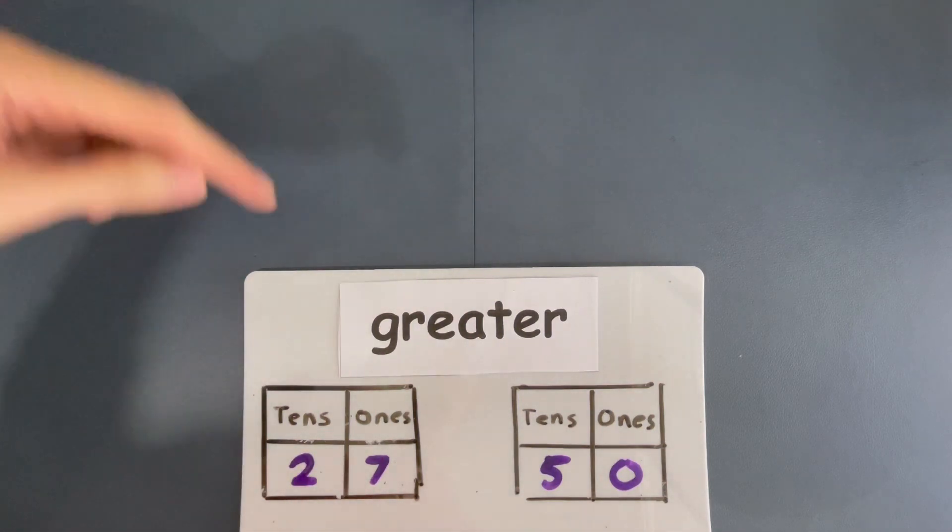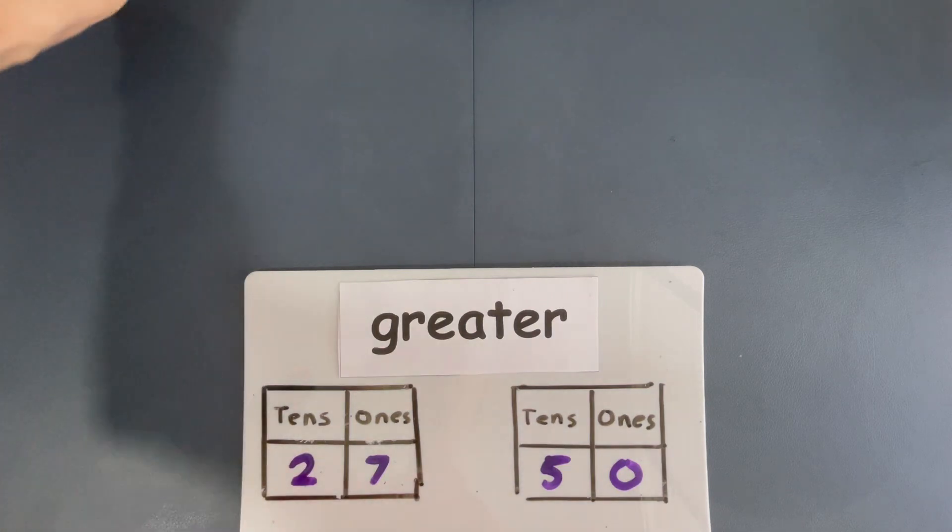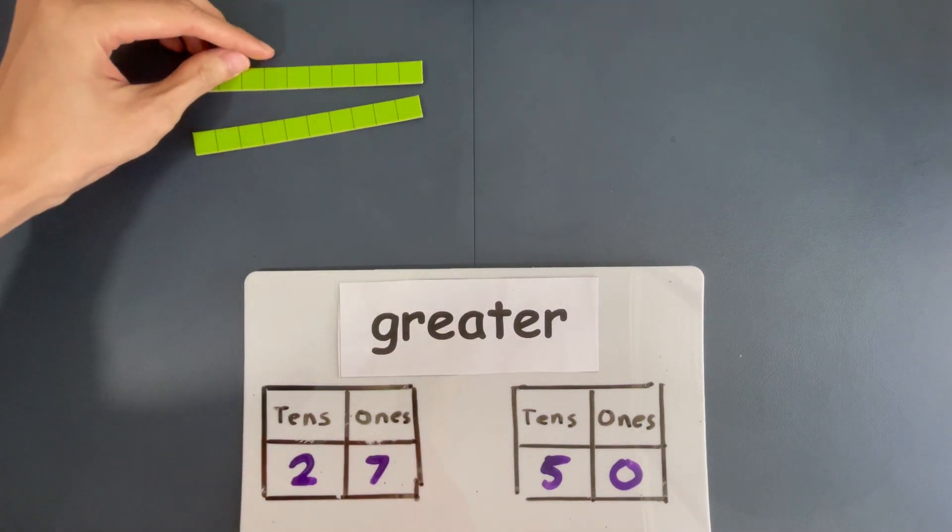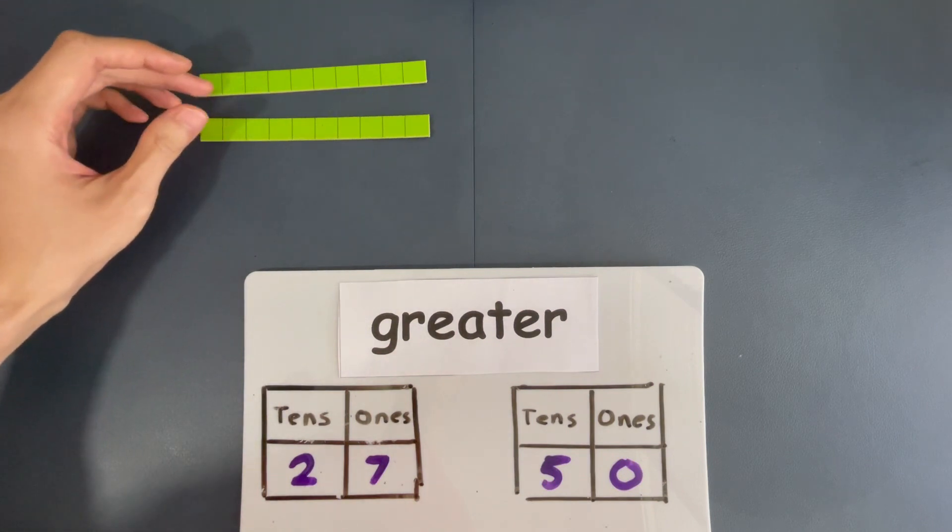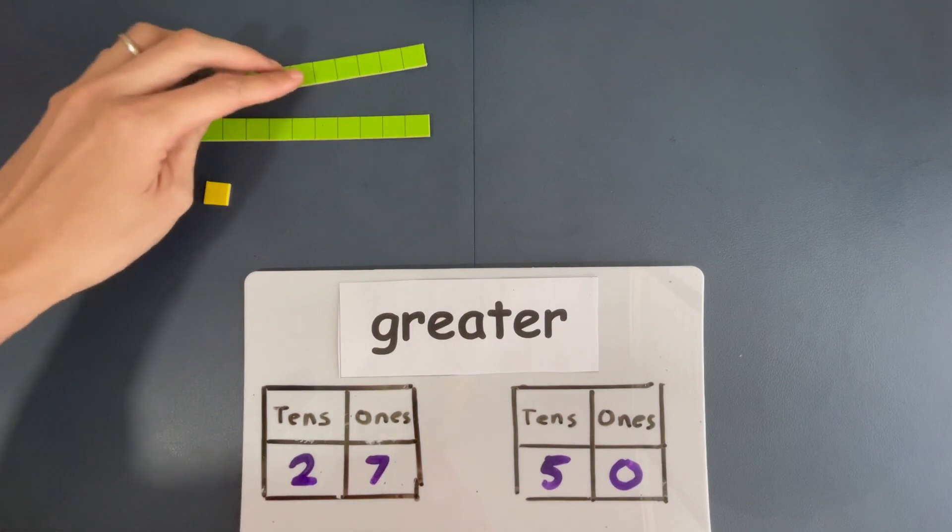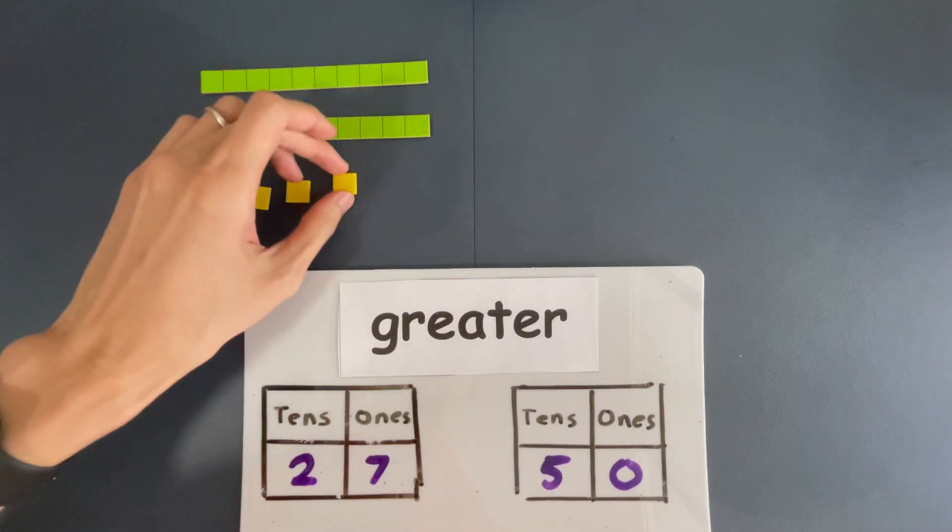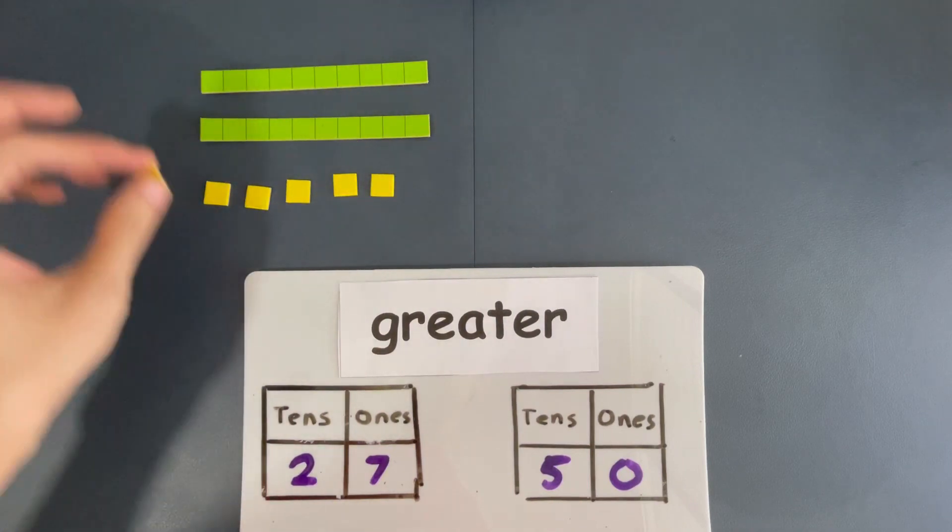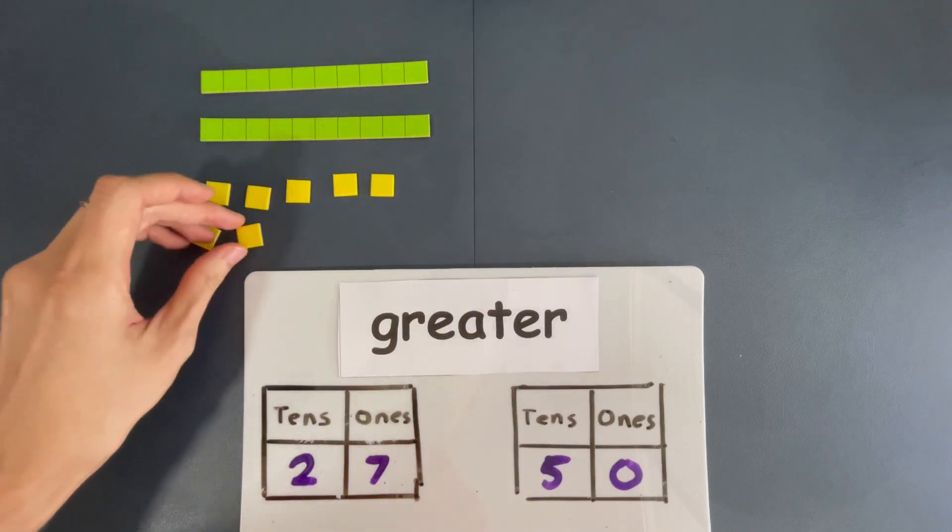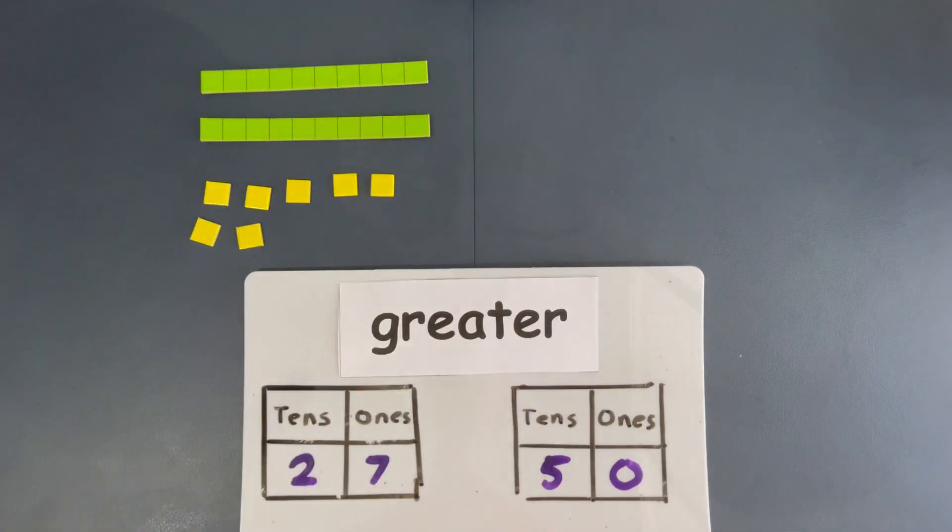Now, there's a very simple way to do this. Let's look at 27. It is made out of two tens. Let's take out two tens first. One ten, two tens. Let's put it nicely. Two tens. Seven ones. Let's take that out. One one, two ones, three ones, four ones, five ones, six ones, and seven ones. This here is 27.